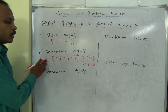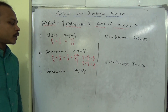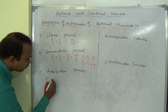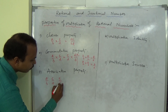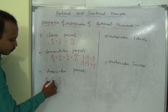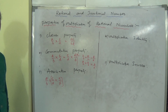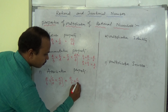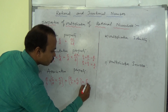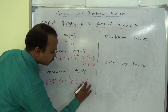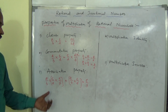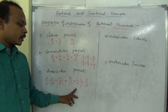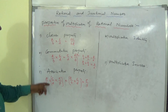Now, associative property. In commutative property, we use only two fractions; in associative, we discuss three fractions: a/b, c/d, and e/f. First multiply the last two and then multiply the result with the first — that should equal a/b × c/d × e/f. That is, (a/b × c/d) × e/f = a/b × (c/d × e/f). So associative property also exists.